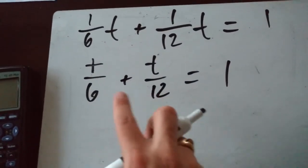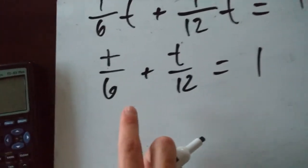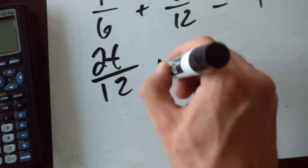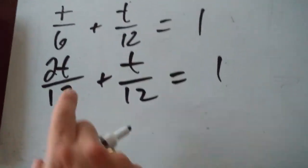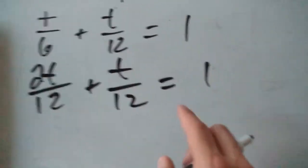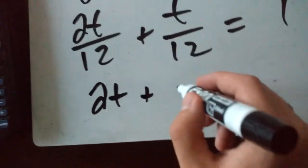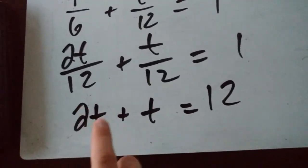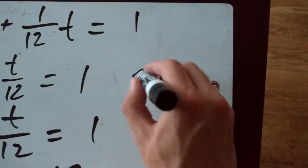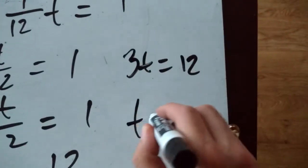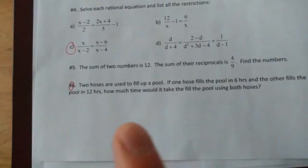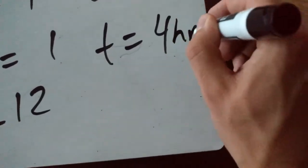To get rid of the divide by 12, multiply both sides by 12: 2t plus t equals 12. So 3t equals 12, and dividing by 3 gives t equals 4. So working together, even though on their own it was 6 hours for hose A and 12 hours for hose B, working together the time is just 4 hours.